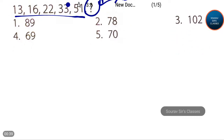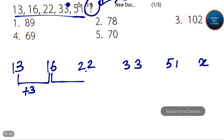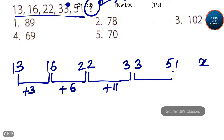The sequence is 13, 16, 22, 33, 51, and x. The difference between the first two terms is plus 3. The difference between the next two is plus 6. The difference between the next two is plus 11. The difference between 51 and 33 is plus 18.